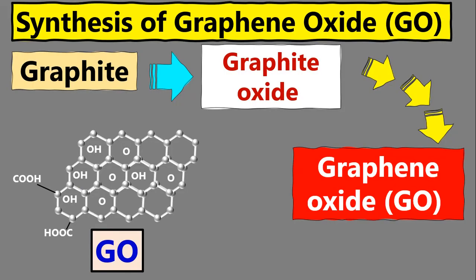Basically, we get graphene oxide through this way: we start with graphite, then we oxidize it to get graphite oxide. From there, we exfoliate and we get graphene oxide. From graphene oxide, we then reduce it and get reduced graphene oxide.